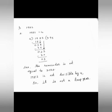Then we drop the digit 3, and it becomes 23. 4 times 5 is 20. Then do subtraction. 3 minus 0 is 3, and 2 minus 2 is 0. What remainder did we get? We got the remainder 3.